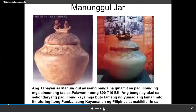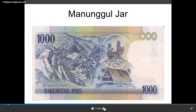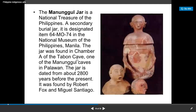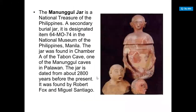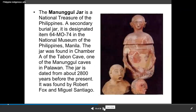We also have the Manunggal Jar — a burial jar used in Palawan around 890 to 710 BC. The jar was used for secondary burial, meaning only bones were stored inside it. It can also be seen on the 1,000 peso bill and is considered a national treasure of the Philippines. It was found in Chamber A of the Manunggal Cave in Palawan — a place historical not only for its beautiful beaches but also for its significant caves.